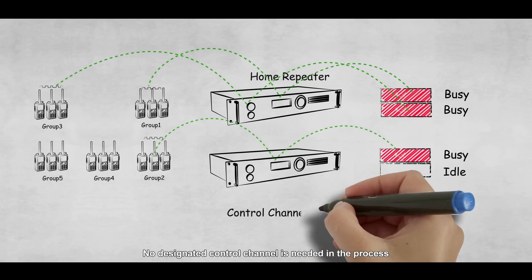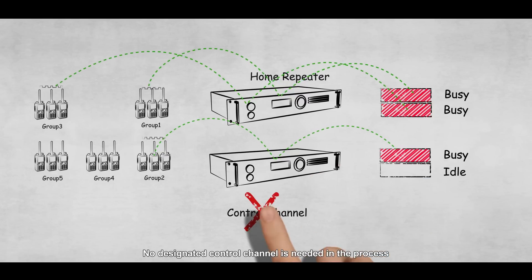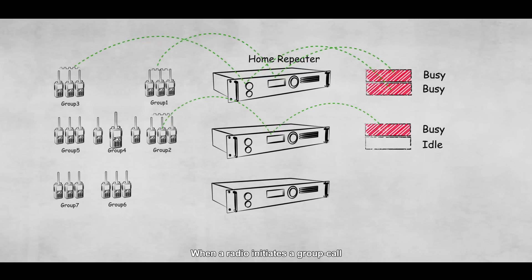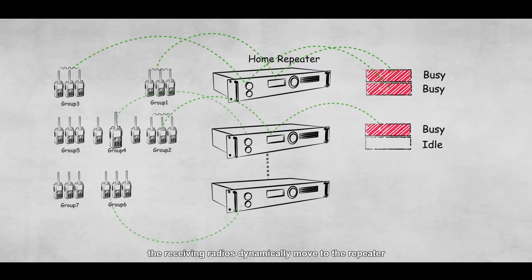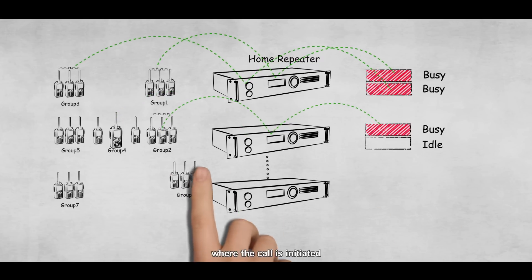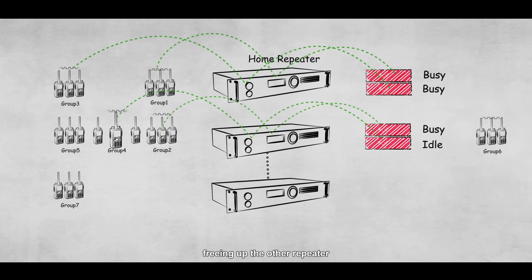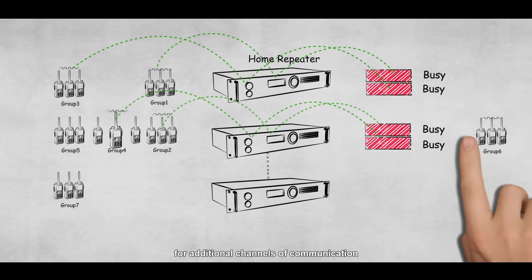No designated control channel is needed in the process. When a radio initiates a group call or all call with groups under a different repeater, the receiving radios dynamically move to the repeater where the call is initiated, freeing up the other repeater for additional channels of communication.